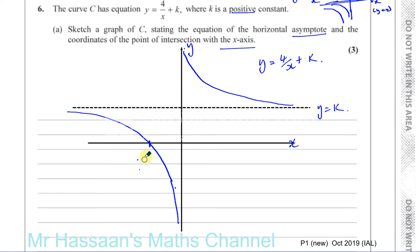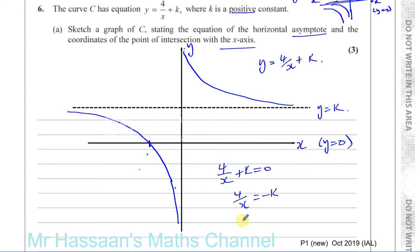They asked us to put the coordinates of the point where it intersects the x-axis. Whenever a curve or a line cuts the x-axis, that's when y equals 0, because the x-axis is y equals 0. So when y equals 0, we have 4 over x plus k equals 0. So 4 over x equals minus k. Cross-multiplying, we get x equals minus 4 over k. So this point here is (−4/k, 0) — that's the x-intercept.